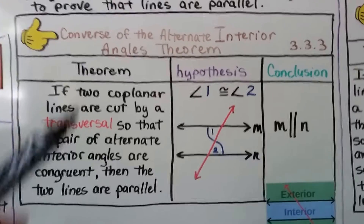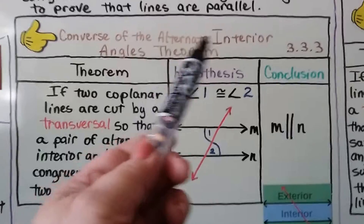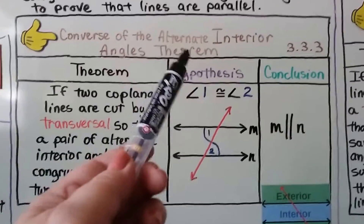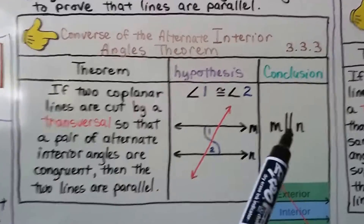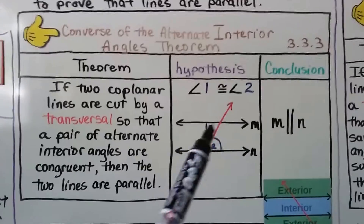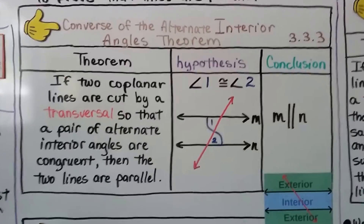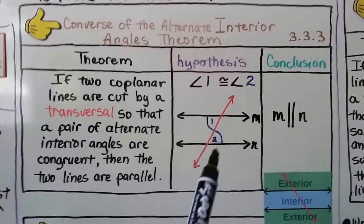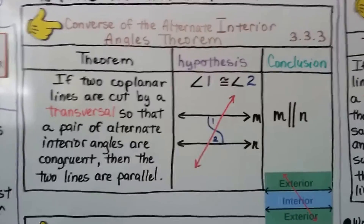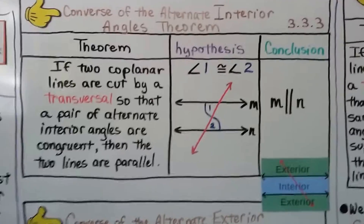When we were doing the regular alternate interior angles theorem, it said if m and n are parallel and cut by a transversal, then angle 1 and angle 2 would be congruent. Now we're saying because they're congruent, the lines are parallel. We flipped it around.